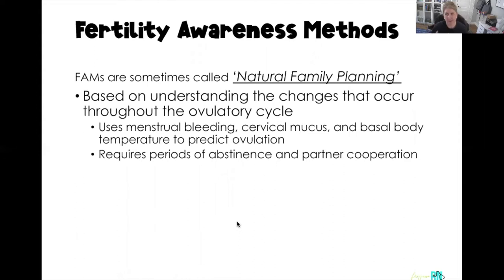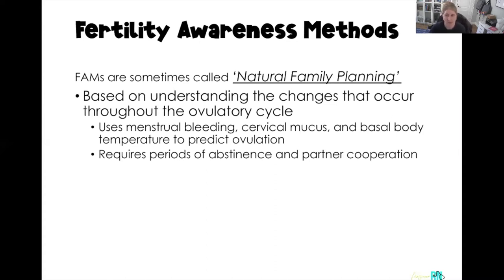Understanding the changes that occur throughout the ovulation cycle is how we teach women fertility awareness methods. As nurses or healthcare providers, we need a really good understanding of that menstrual cycle and its changes. These methods use menstrual bleeding, cervical mucus changes, and basal body temperature to predict ovulation. Using these methods does require a period of abstinence at certain times every single month.